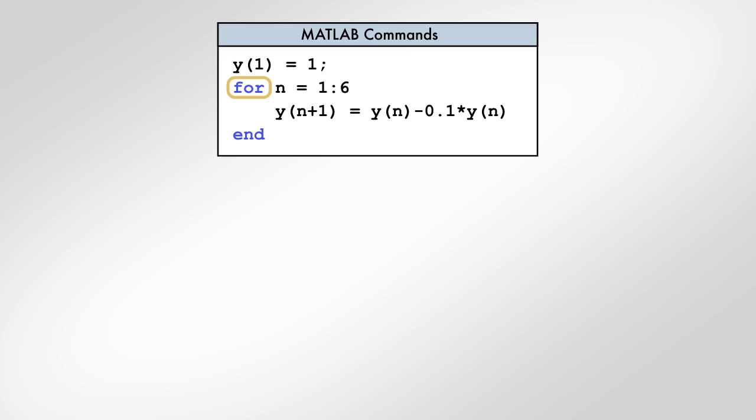The for loop starts with the keyword for followed by the syntax for defining a vector. This syntax creates a variable called a loop variable or iteration variable that takes on values in the vector one by one.